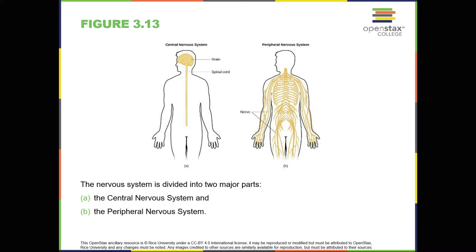Motor neurons carrying information from the central nervous system to the muscles are efferent fibers, with efferent meaning moving away from. Sensory neurons carrying sensory information to the central nervous system are afferent fibers, with afferent meaning moving toward. Each nerve is basically a two-way superhighway containing thousands of axons, both efferent and afferent.